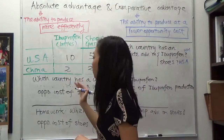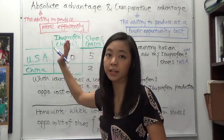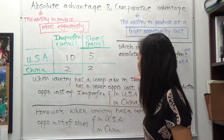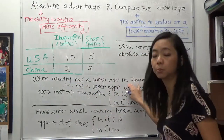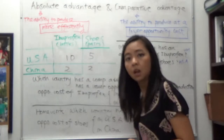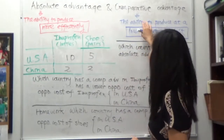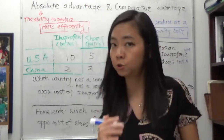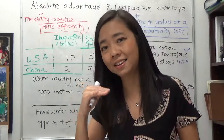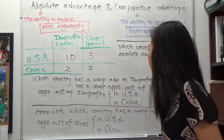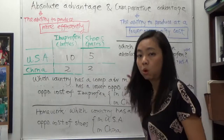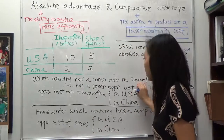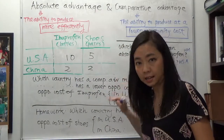What is a little bit more complicated will be comparative advantage. Suppose the next question asks you: which country has a comparative advantage in the production of ibuprofen? We go back to our definition — you have a comparative advantage if you're able to produce the good at the lower opportunity cost. So to answer that question, we have to calculate the opportunity cost of ibuprofen production for both USA and China.